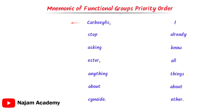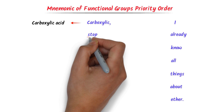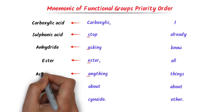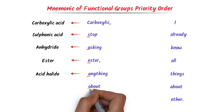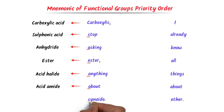Here, carboxylic stands for carboxylic acid. This S stands for sulfonic acid. This A stands for anhydride. This E stands for ester. This A stands for acid halide. This A stands for amide. This C stands for cyanide. This I stands for isocyanide.